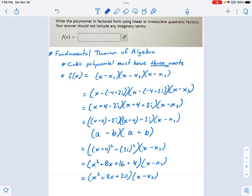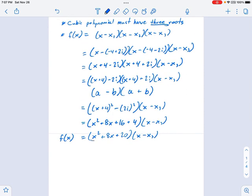This is fantastic. This means all I have to do is divide each side by x squared plus 8x plus 20. These are going to cross out, and I'll have x minus x3, my final factor. So I think it's time for a little long division.